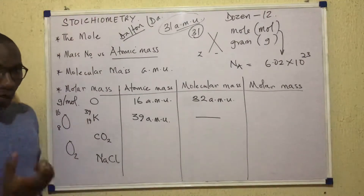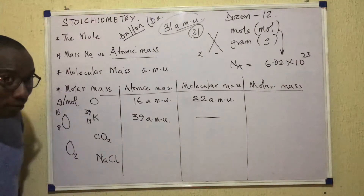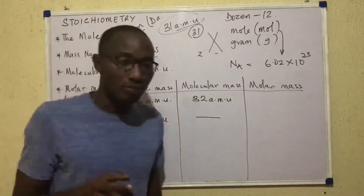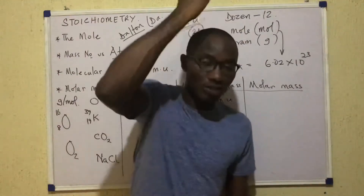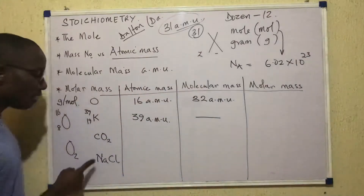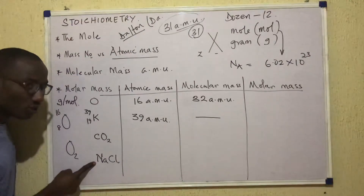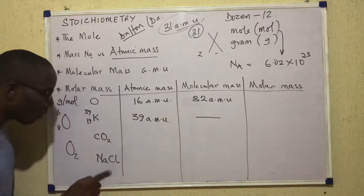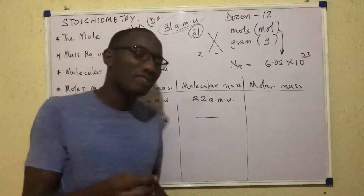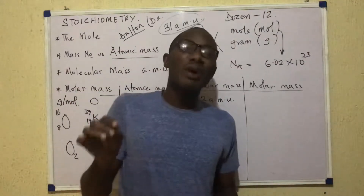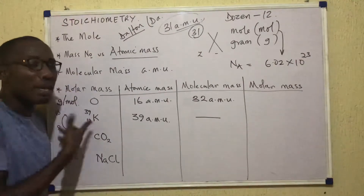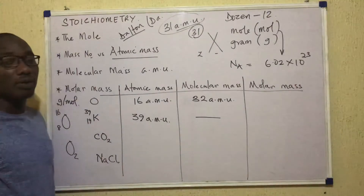CO₂ and NaCl are both compounds — each is made up of atoms of two different elements joined by chemical bonds. But the bond in CO₂ is covalent, while in NaCl it is electrovalent, which is ionic. When you have a compound that is covalent, you can call it a molecule. But a compound that is not covalent cannot be called a molecule. So CO₂, being covalent, is suitably called a molecule. All molecules are covalent.